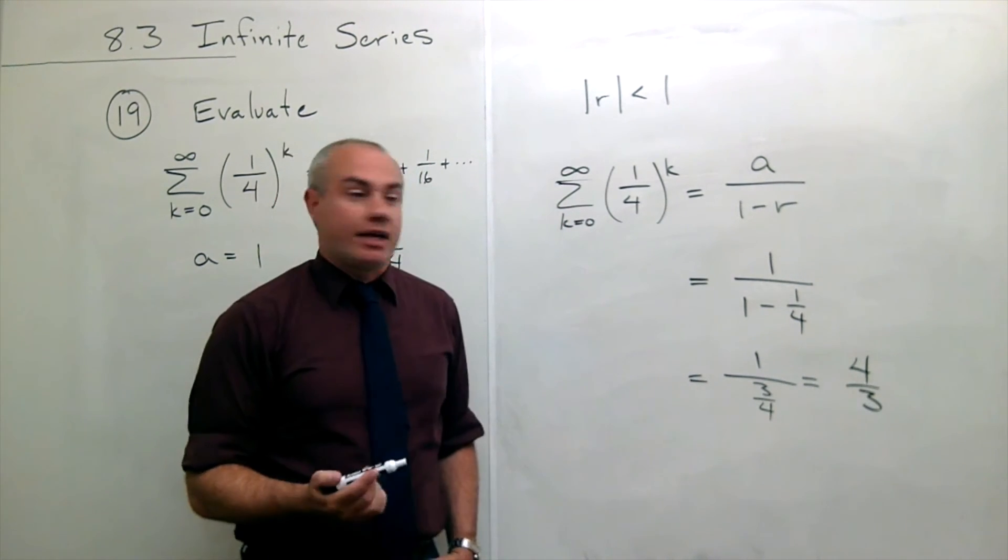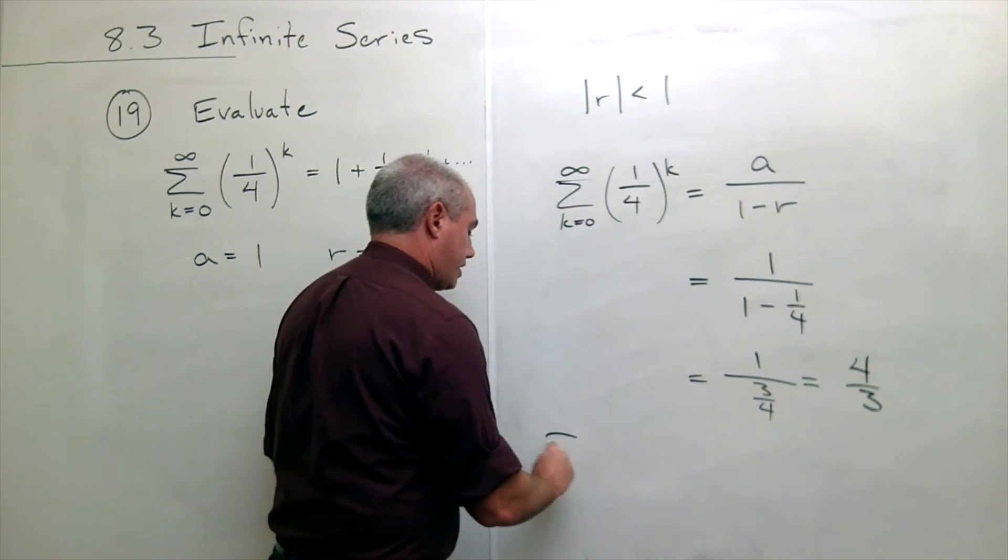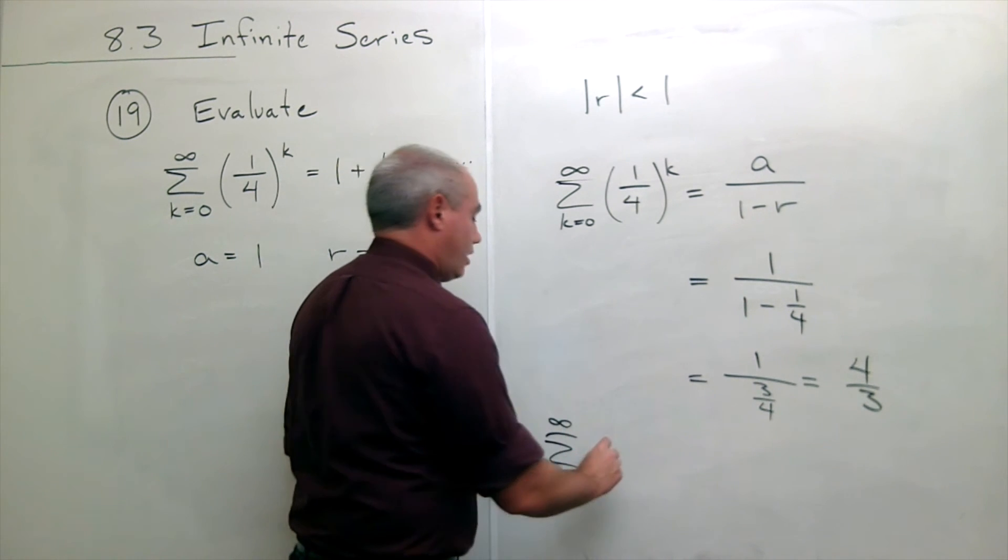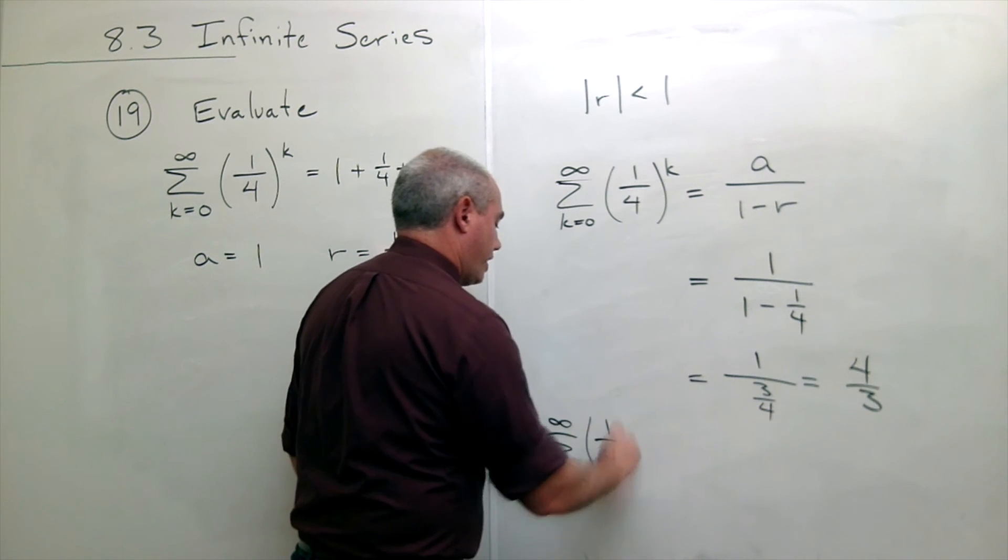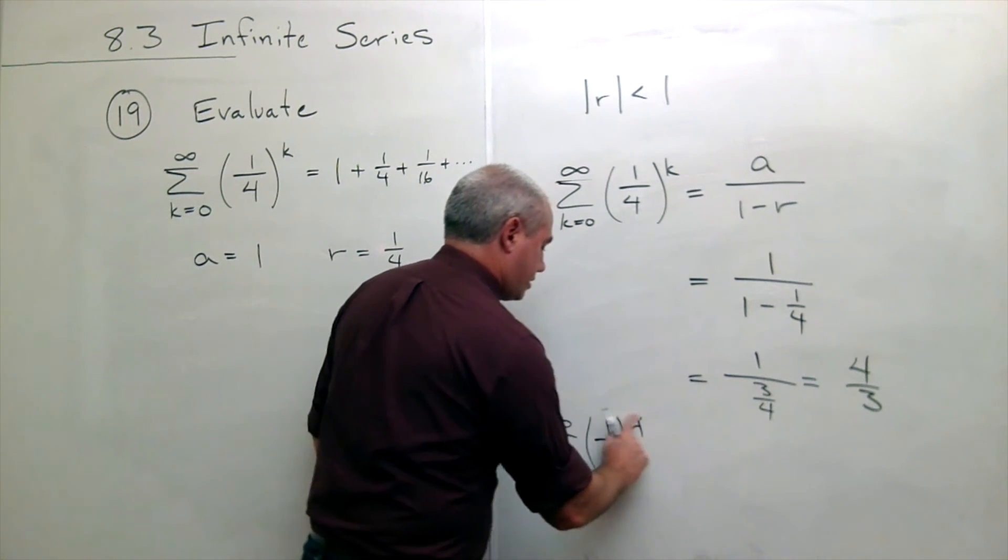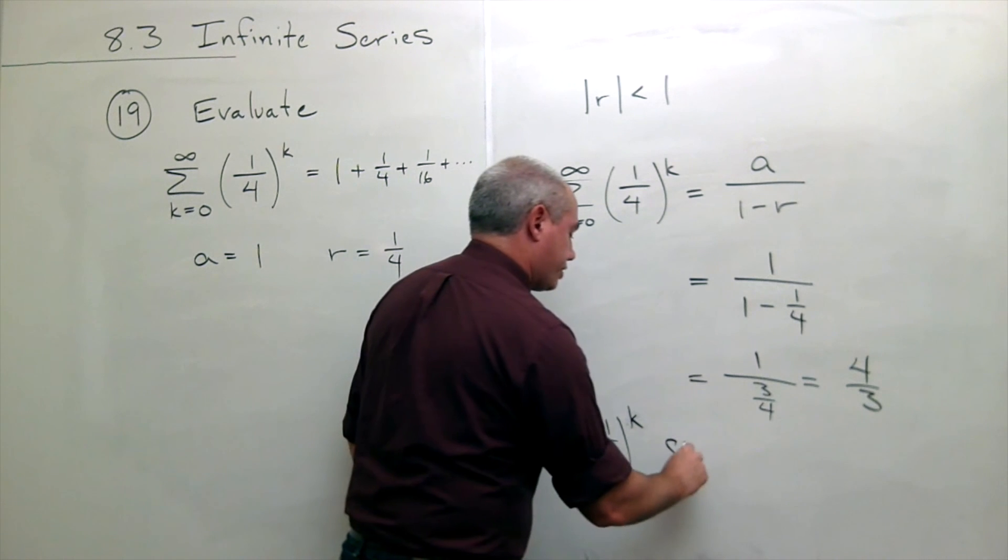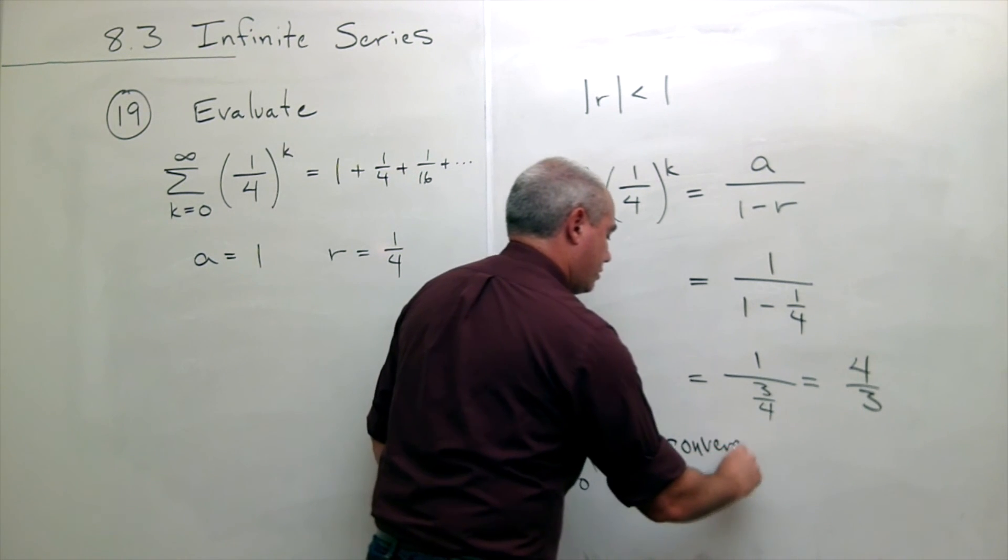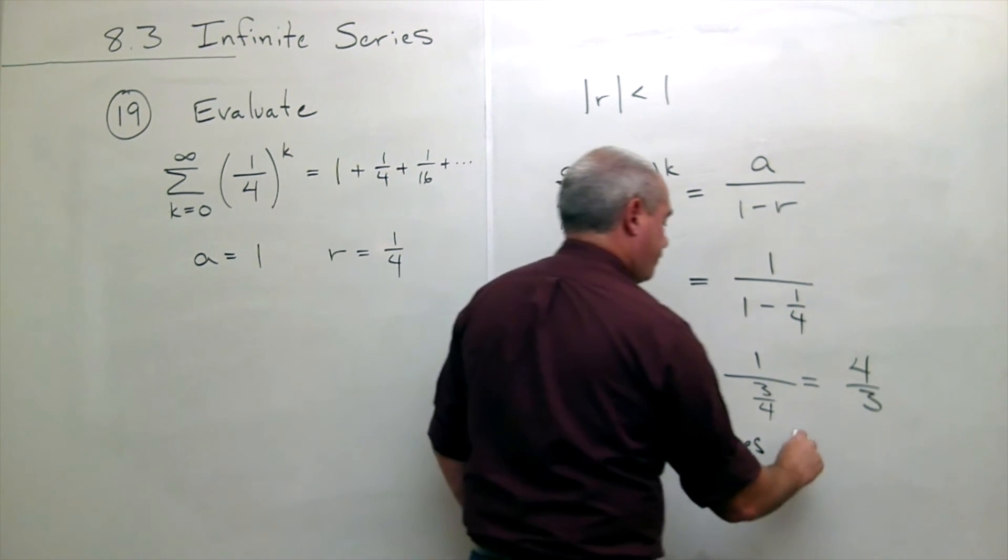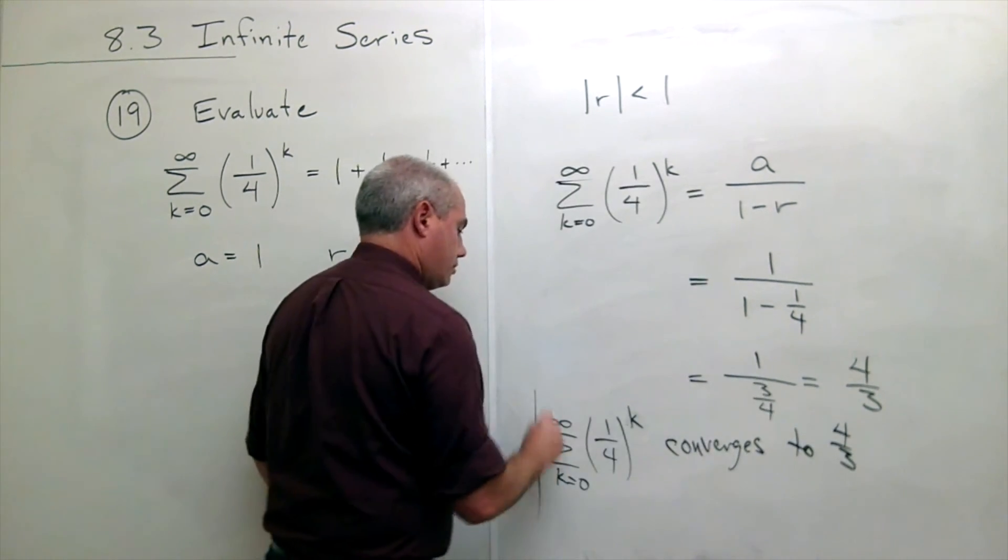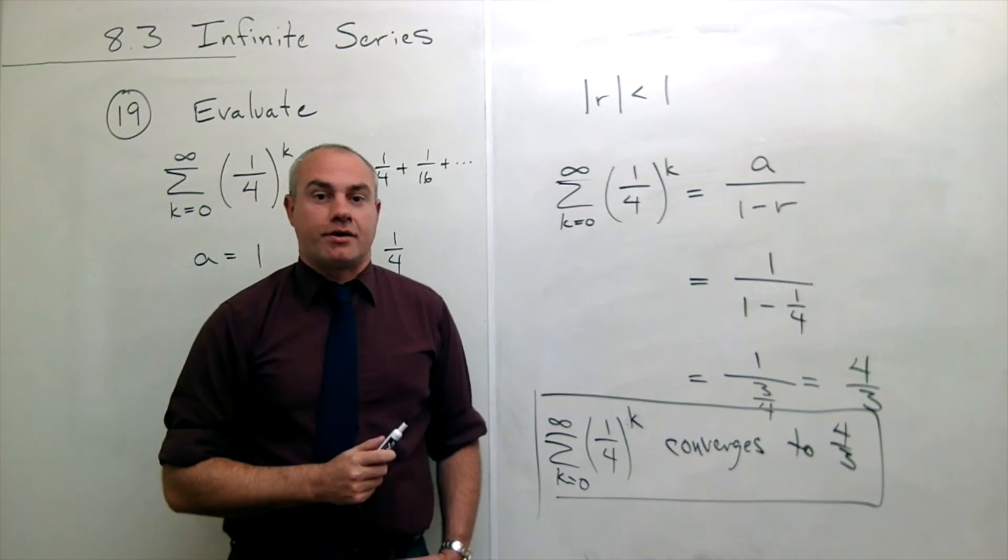So what I'd write in the end here is that the sum k going from zero to infinity of one fourth raised to the k, that's not a k, raised to the k converges to four thirds. And we are done.